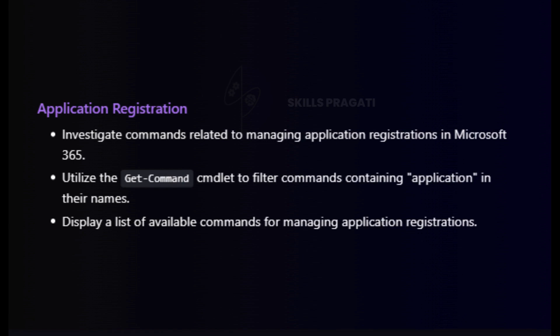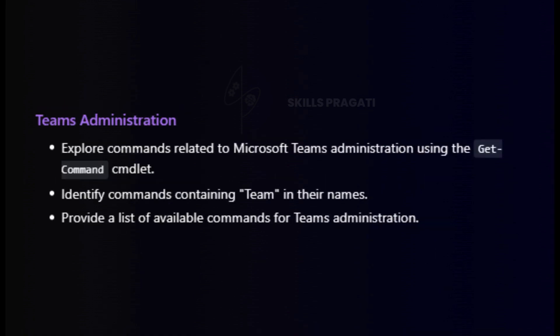At last, we will explore commands for teams — Task 4: explore teams administration commands. Our exploration extends to Microsoft Teams administration. Using the get command, we will identify commands containing 'team' in their names. This focused approach will result in a concise list of available commands, equipping administrators with the necessary tools for streamlined and effective teams administration. After completion of all these tasks, you will follow the same pattern to explore any of the graph resources using PowerShell. Now let's jump to Visual Studio Code and write the code for all these four tasks.